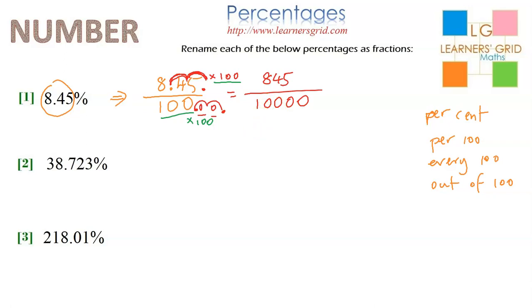So now, while we have created a fraction and renamed 8.45% as 845 over 10,000, we shouldn't stop there. We should simplify our fraction to its simplest form. You need to find the highest common factor, or greatest common factor, the same thing. That's a factor that goes into 845 and 10,000, but it needs to be the biggest one possible.